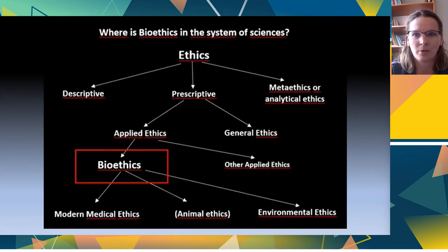This is a self-made figure about bioethics and where it is in the system of sciences, to help us visualize where we should imagine it. Ethics has two separatable trends: descriptive, prescriptive, and analytical ethics. For us the prescriptive one will be the core and essential one. Prescriptive ethics is a normative philosophical school, and it has two parts: applied and general ethics. Applied ethics uses the theories of general ethics to solve moral issues.